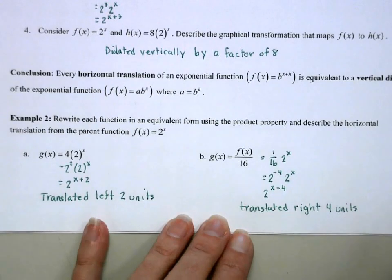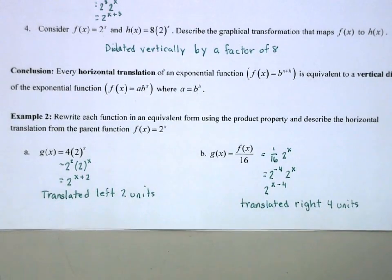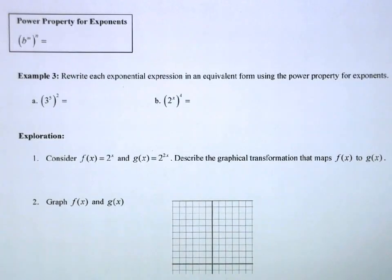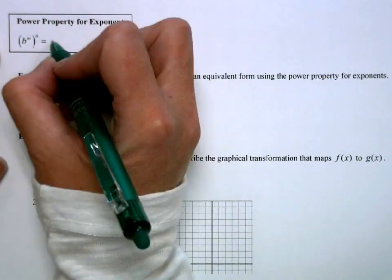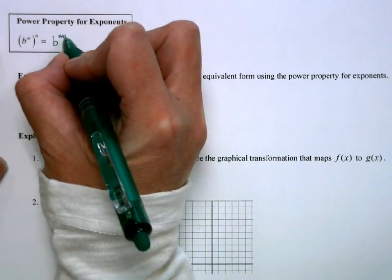It's just that recognizing that a vertical dilation with exponential functions is also a horizontal translation. So we're going to do the x plus h. Next we have the power property for exponents. So when we have b to the m to the n, that's equivalent to b to the m times n.